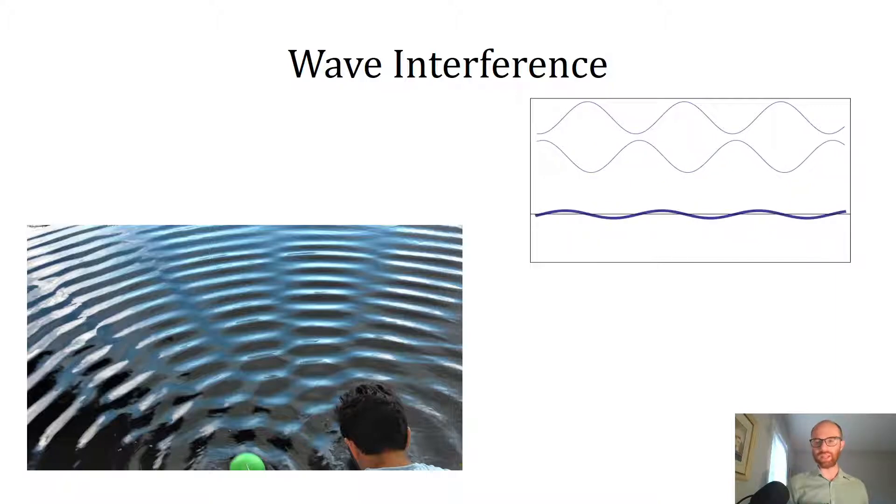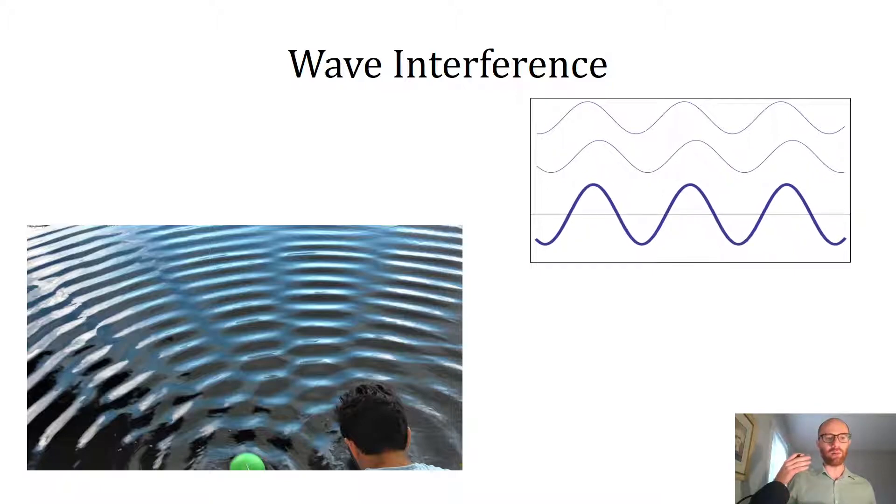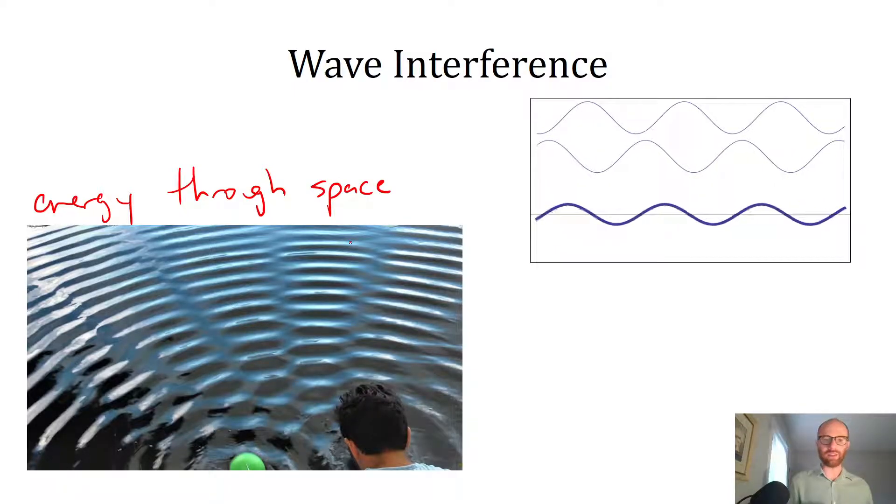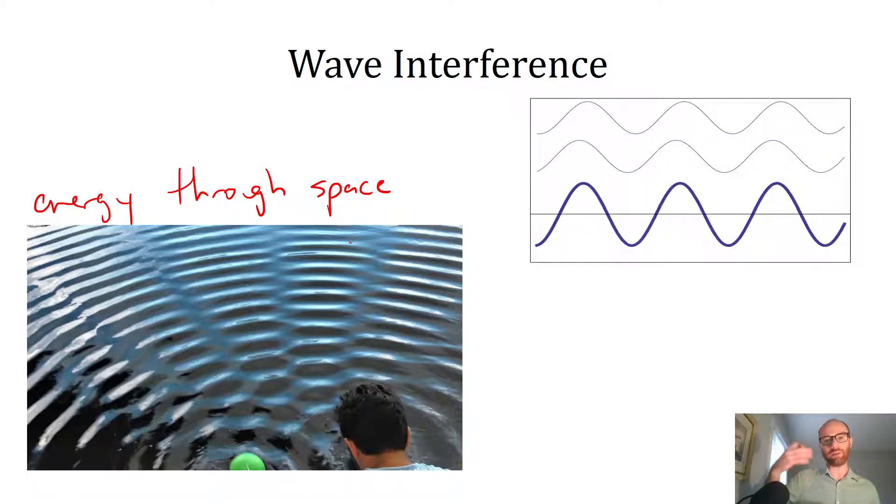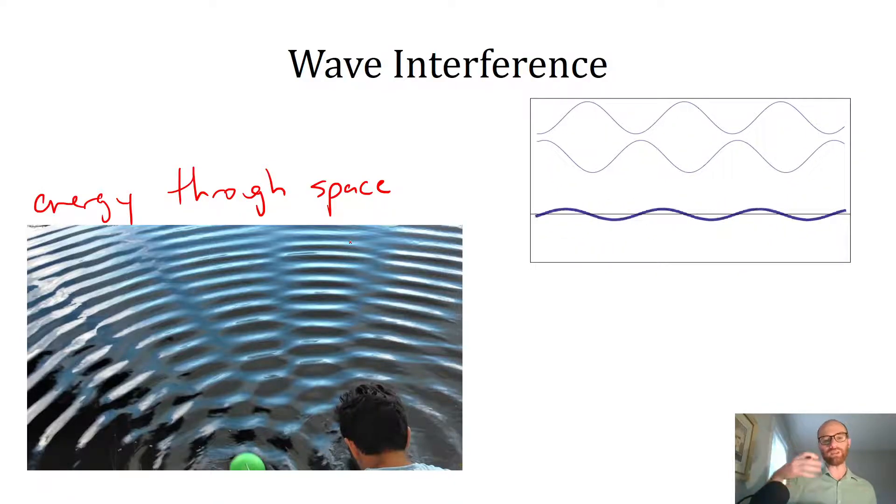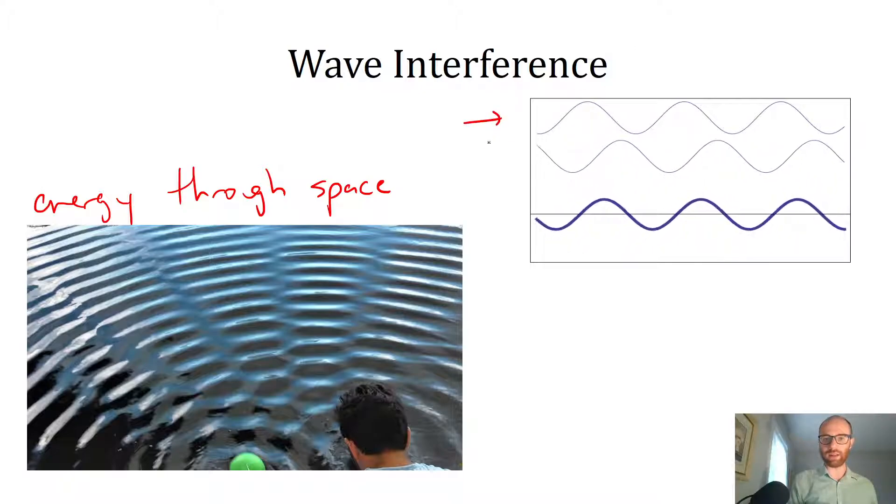So just to recap what was said and give a little bit more information. What we have here is an image of something we know that happens in the macroscopic world with waves, waves being a way of energy propagating through space. On the bottom, what we have is you're dropping two balls into water and they're making a bunch of waves as they bounce in the water. You can see that the waves created from the two balls interact with each other.